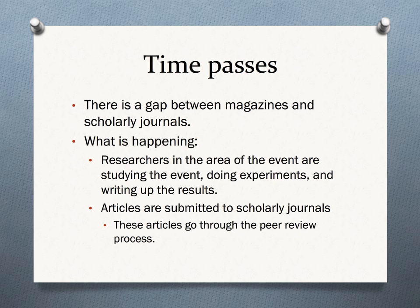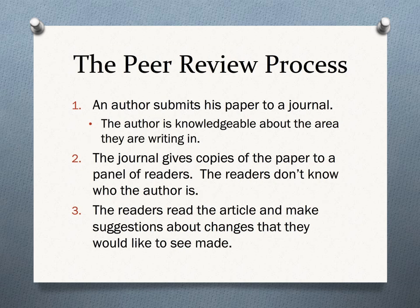At this point, the articles go through the peer review process. The peer review process starts with the author submitting their article to a journal. The journal decides if the article is something that the journal would cover. If it is, the article has all information about the author removed, and then sends copies of the article to a panel of readers.